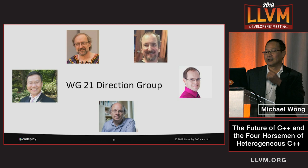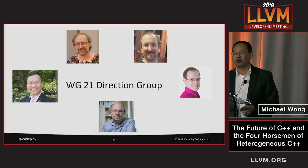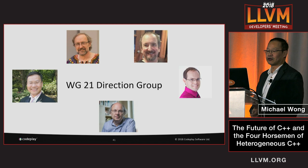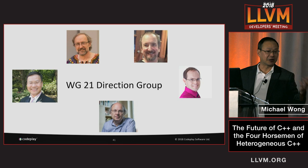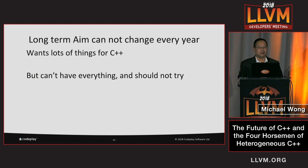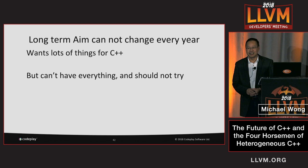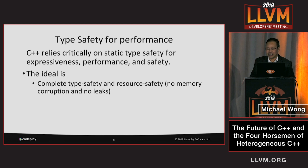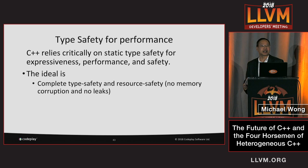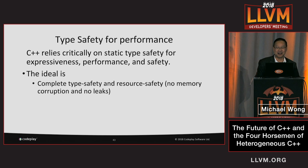What is the Directions Group? It's a group started in 2017, although the idea came from real needs. It's an invitation-only group chosen for our decades of C++ standard experience and a demonstrated modicum of fairness and impartiality when looking at different proposals, even when our own is competing with them. Assuming we succeed, many of us are going to be writing C++ for 10 to 20 more years. Long-term aims basically cannot change every year. The one thing we keep coming back to is that C++ relies critically on static type safety for expressiveness, performance, and for doing safe things.